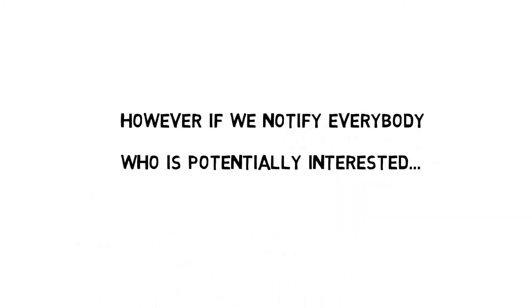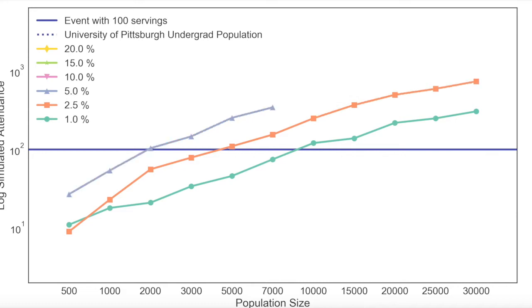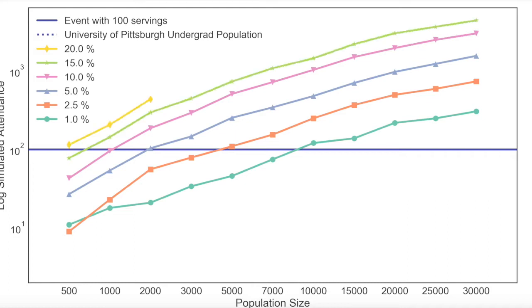In our plot, the x-axis is the population size, the y-axis is how many people show up, and the different curves correspond to what percentage of those notified do show up. As you can see, very quickly the curves cross over the 100 leftover servings line. People show up and there's no more free food.